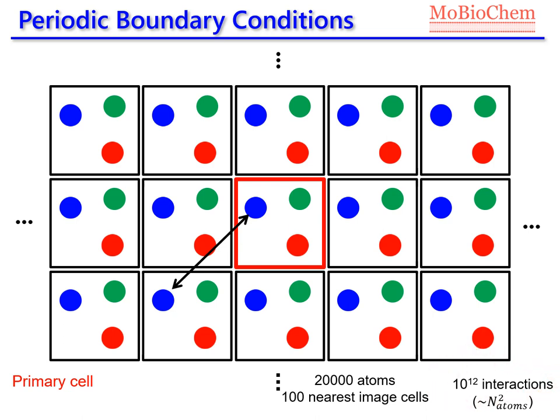Remember, in classical MD, if we want to evolve our simulation for several hundreds of nanoseconds, we need to solve the equations of motion several millions of times. So at the end, the calculation is almost impossible to do from the computational point of view.